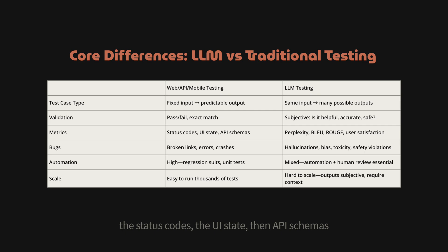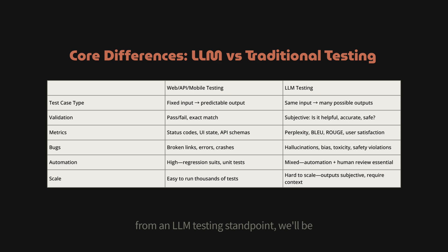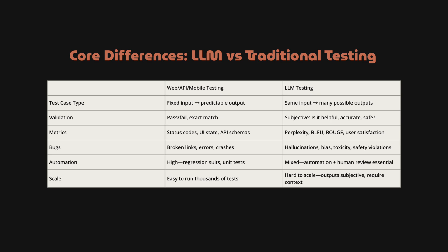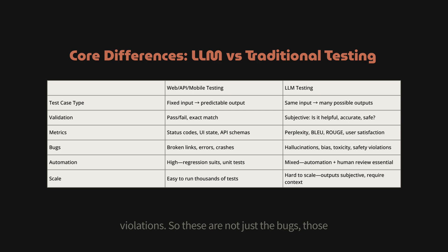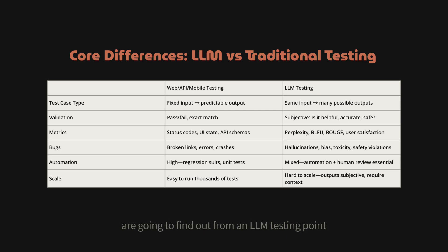From a metrics standpoint, traditional testing verifies status codes, UI state, API schemas, and response codes. LLM testing verifies perplexity, ROUGE, user satisfaction, and other scores. From a bugs standpoint, traditional testing has broken links, errors, and crashes, whereas LLM testing has hallucinations, bias, and safety violations — different categories of bugs found during LLM testing.